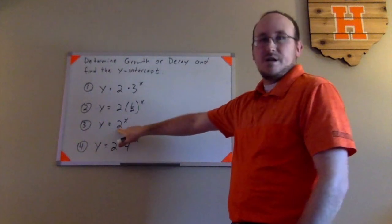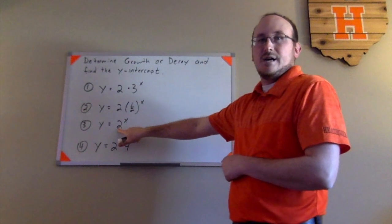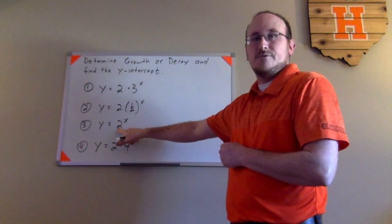Looking at the value of b, again, that's what's being taken to the power, that's the base. I see that that is 2, so since that is greater than 1, this is definitely representing exponential growth.